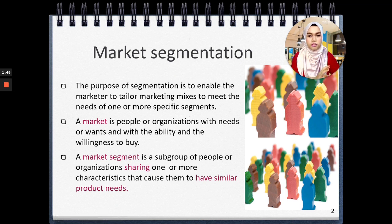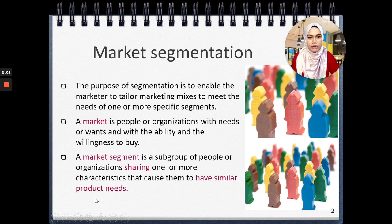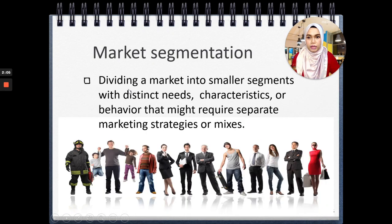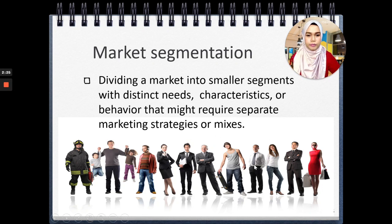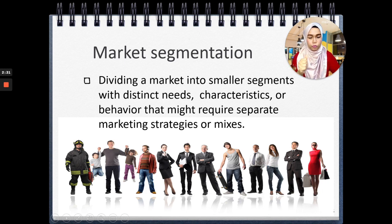In this chapter, we'll cover the consumer market according to your syllabus. A market segment is a subgroup of people or organizations sharing one or more characteristics that cause them to have similar product needs. Market segmentation is dividing a market into smaller segments — subgroups of people with distinct needs, characteristics, or behaviors that might require separate marketing strategies or mixes. For example, looking at a group of people, you can segment them by gender into female and male markets.